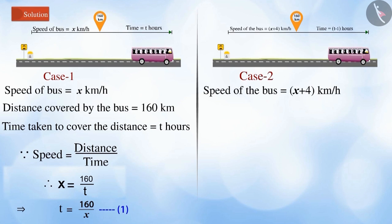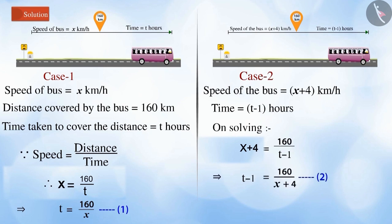On increasing the speed of the bus by 4 km per hour, we get x plus 4. According to the question, on increasing the speed of the bus, it takes one less hour to complete the distance. That is, time is equal to t minus 1. On solving, we get equation 2.